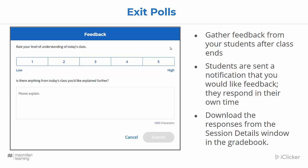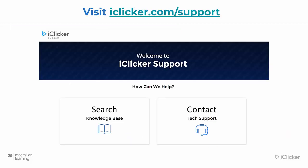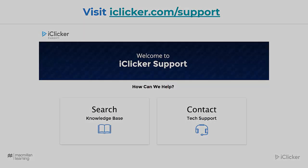When they get their exit poll, they're asked to rate their level of understanding of today's class on a 1 to 5 scale. Then they get a thousand characters to ask any additional questions of their instructor. Thanks for joining me, and for more resources visit iClicker.com/support where you can search our knowledge base or contact us. Thanks for watching and happy teaching! See you next time.